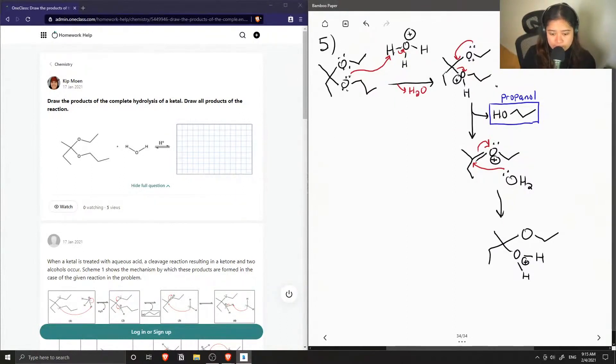and we have a water group that has a positive charge, like so. And to relieve that positive charge, another water molecule can come in and deprotonate, take one of the hydrogens, to give us this intermediate, where we have a newly formed alcohol group, like so.